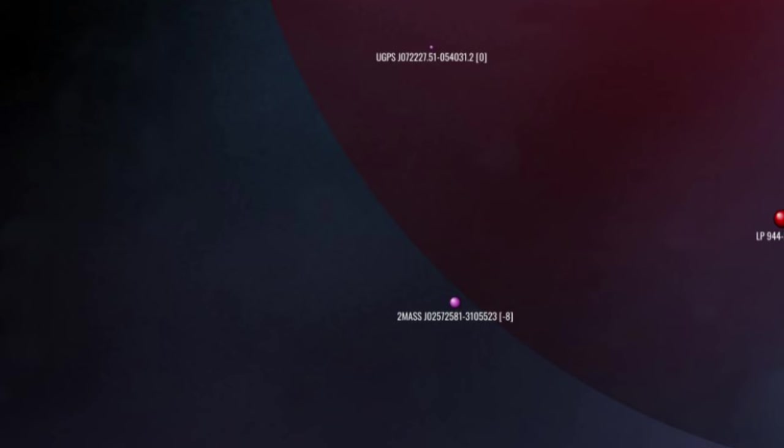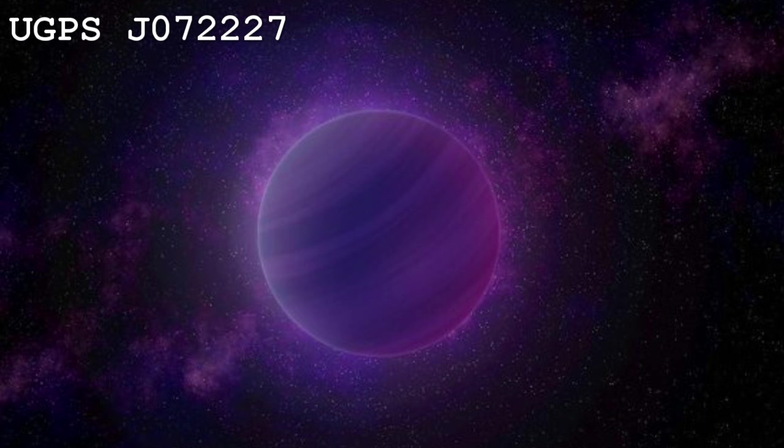West and 8 parsecs north, we arrive at UGPS J072227, a young brown dwarf, estimated to be less than a billion years old, of uncertain, yet puzzling, size. Estimates for its mass are as low as 11 Jupiter masses, which would place it below the 13 Jupiter mass limit for brown dwarfhood. Whether that qualifies it as a sub-brown dwarf or a rogue planet is unknown, and likely will never be known, at least until we send a spaceship there.